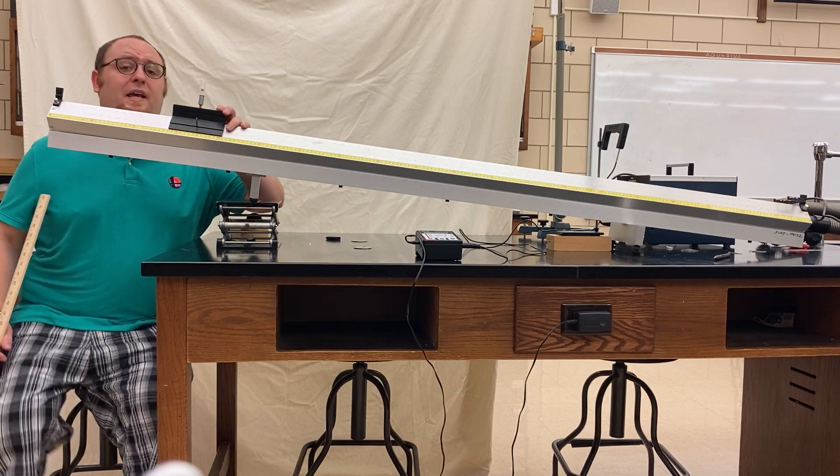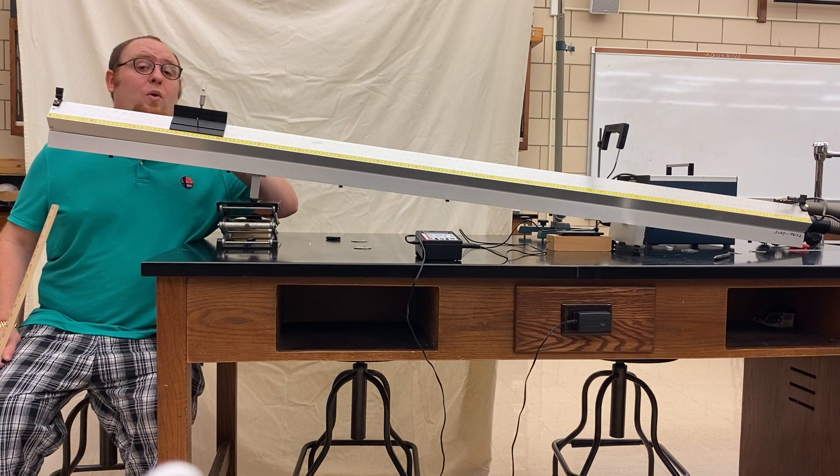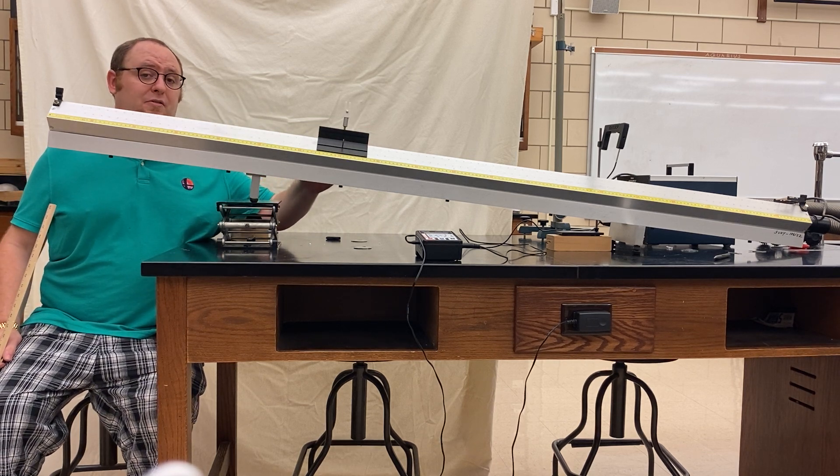Hey, so today we're going to use the air tracks again for conservation of energy. We're going to work with a ramp with only one photo gate today. That photo gate will measure the velocity of anything passing through it.